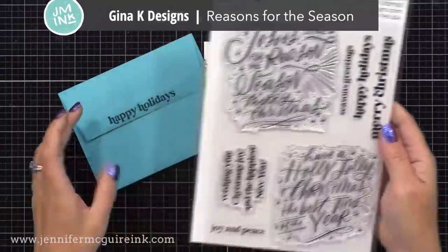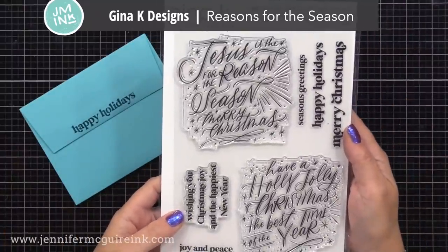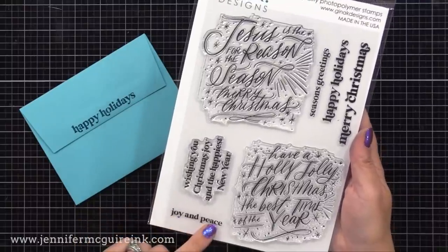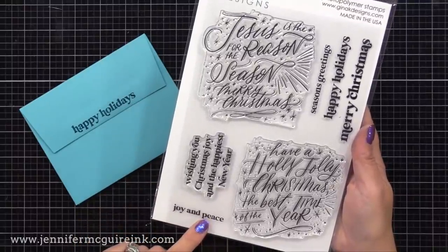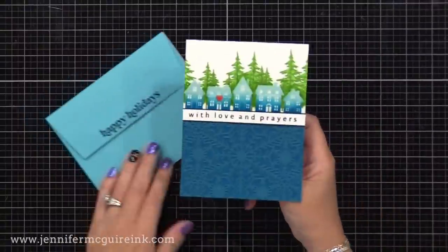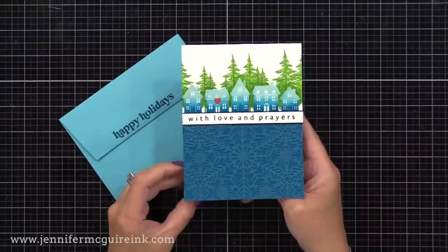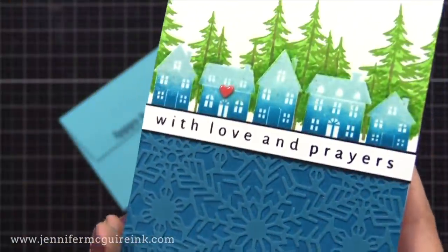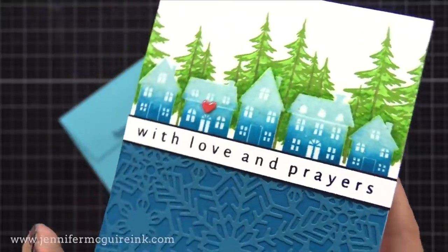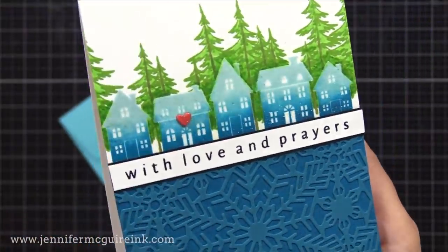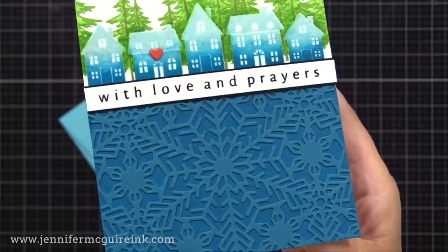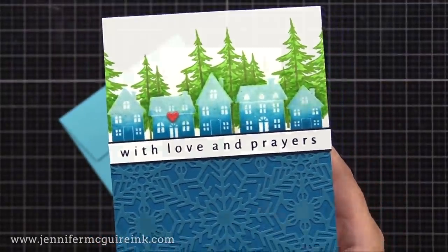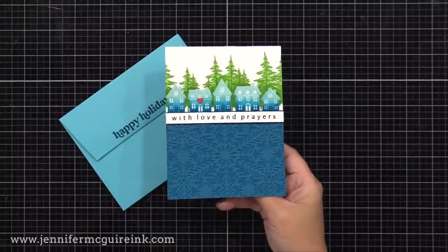Now for a matching envelope, I used a Gina K turquoise sea envelope, along with the new Gina K reasons for the season stamp set. There are some beautiful sentiments in here, but I chose the Happy Holidays just to stamp along the flap of the envelope. I feel like having a matching envelope makes your card extra special. So here's a look at the final result. You can see the fun die cut layering in the bottom, and then the masking that we did on the top with the houses and the trees. Didn't have to do any fussy cutting, and now our houses have that beautiful shine to them. Again, if you don't want that shine on the houses, you can do an iron off technique, which I'll link to in that top video again. But this shine I feel makes the houses stand out even more from the trees in the background.